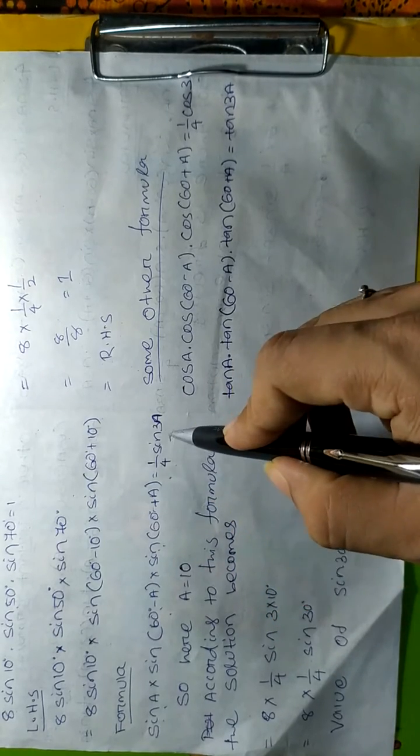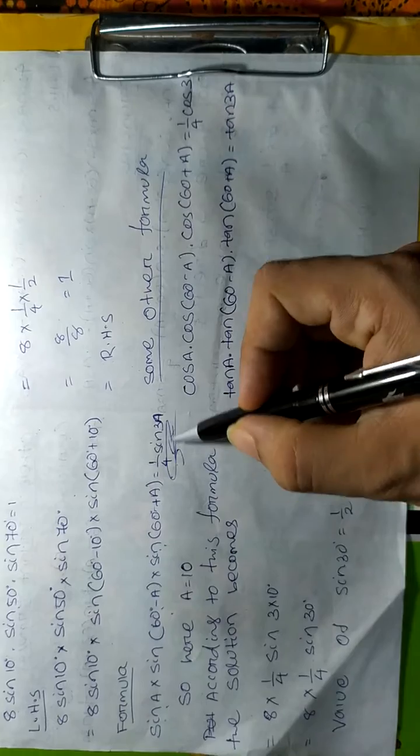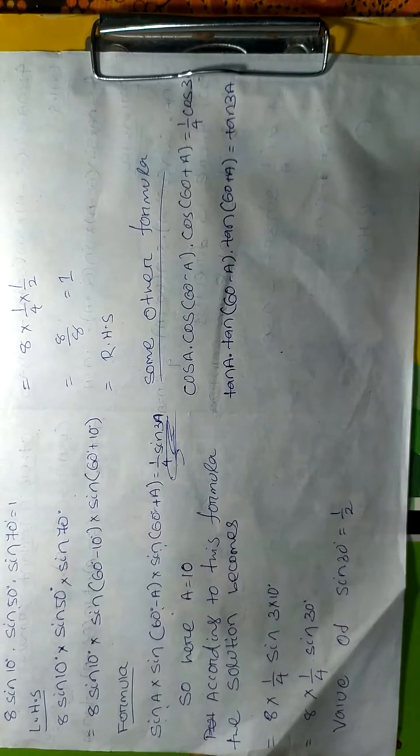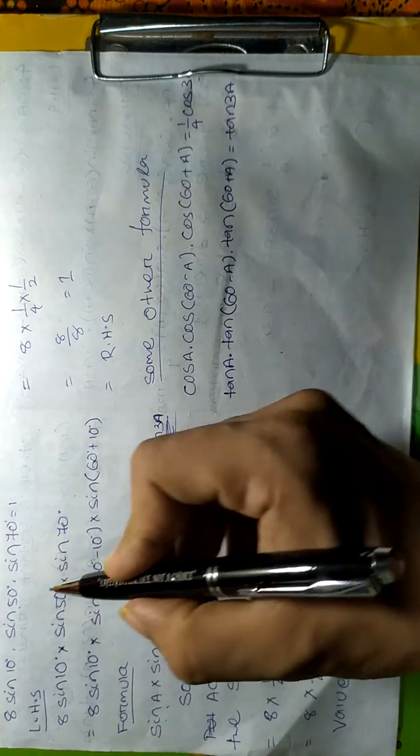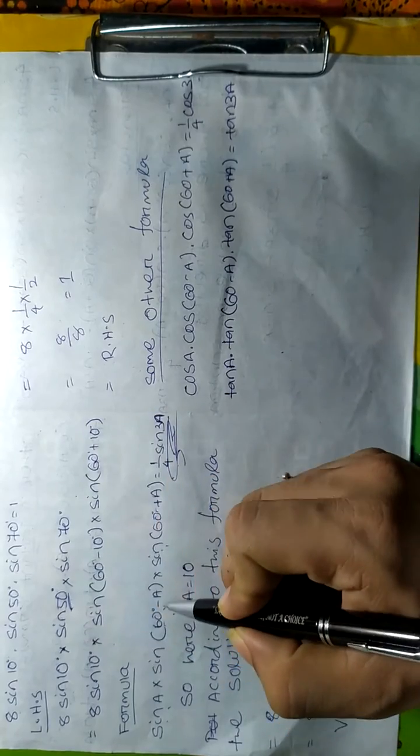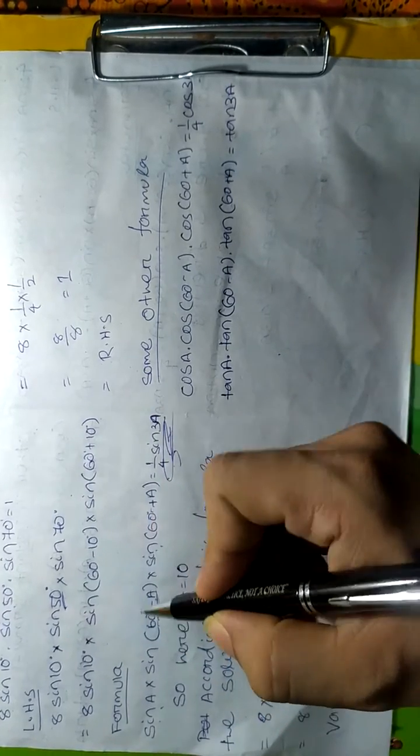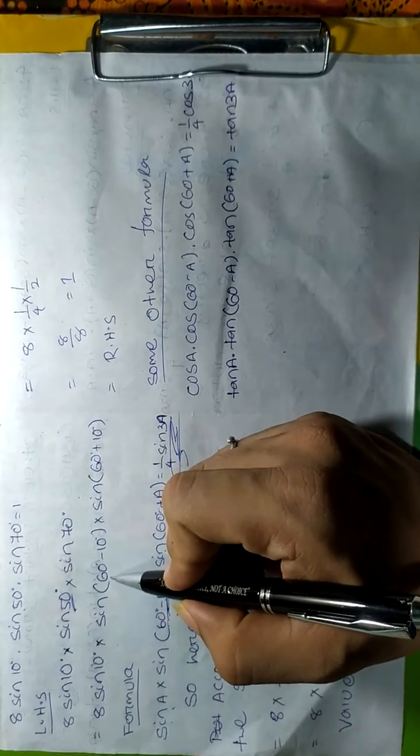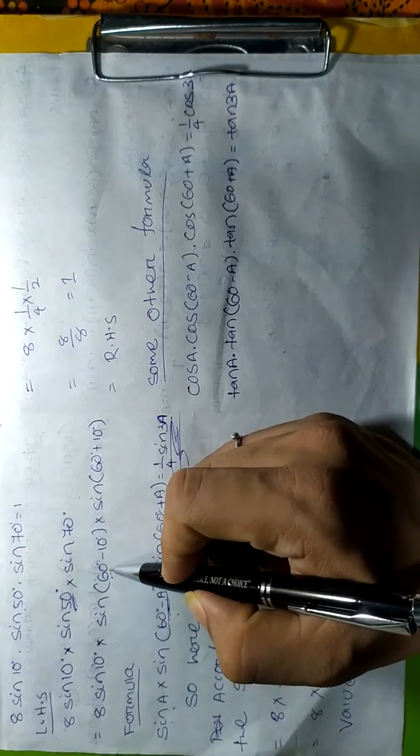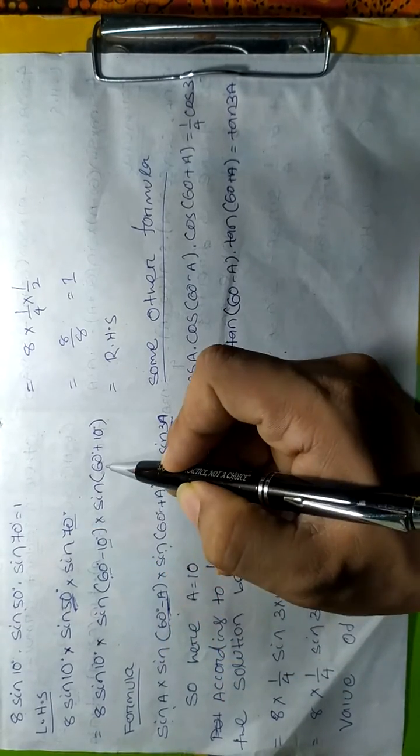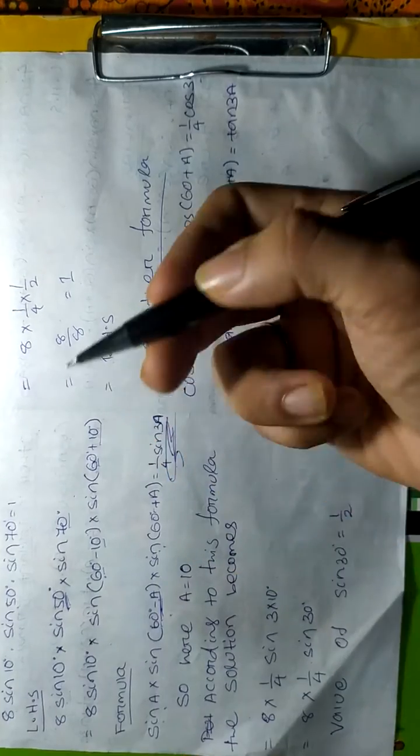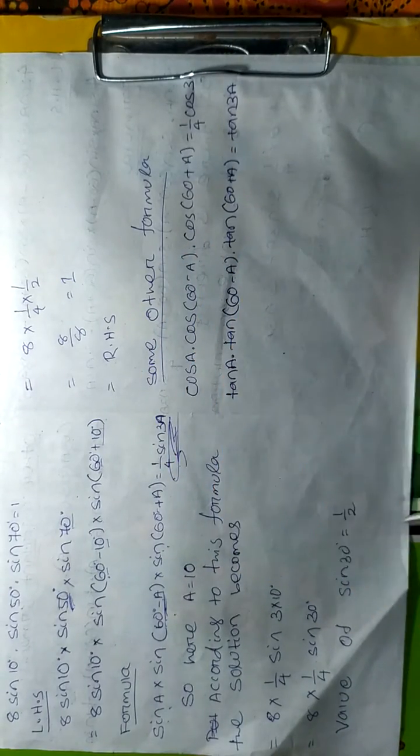Convert 50° to 60° - 10° and 70° to 60° + 10° so that our 'a' value becomes 10°. After that, we have the formula, so here a = 10° according to this formula.